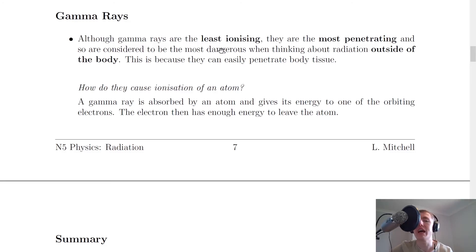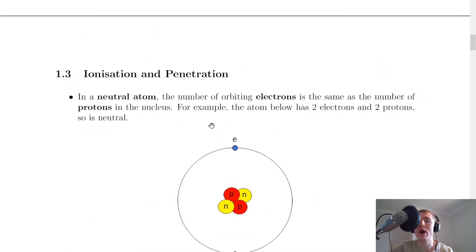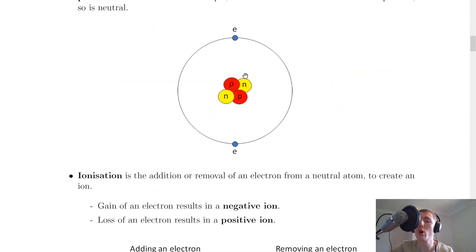How do gamma rays cause ionization of an atom? A gamma ray is absorbed by an atom and gives its energy to one of the orbiting electrons. The electron then has enough energy to leave the atom. Going back to our picture of the neutral atom, if the atom absorbs a gamma ray it will have more energy and can give that energy to one of its orbiting electrons — for example the top one — which may then have enough energy to leave its energy level and be emitted from the atom.